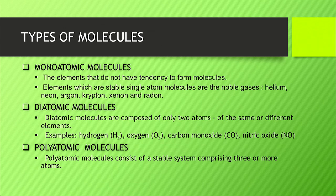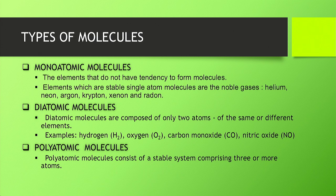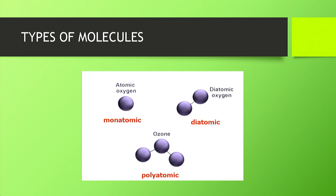Diatomic molecules consist of only two atoms of the same or different kind — for example hydrogen, oxygen, carbon monoxide, and nitric oxide. They are two-atom molecules called diatomic molecules. Polyatomic molecules consist of stable systems of three or more atoms. For example, atomic oxygen is monoatomic and stable, diatomic oxygen is O₂, and ozone is a polyatomic form of oxygen.